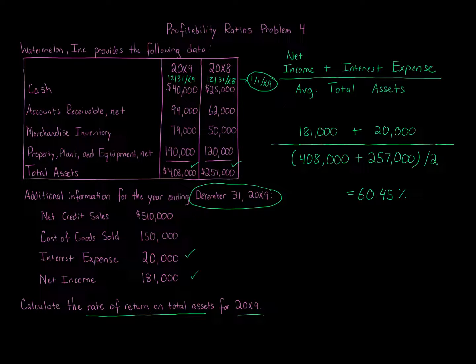So in other words, the rate is not affected by the portion of assets financed by creditors or stockholders. So by adding the interest expense to net income, the effect of whether the assets are financed by creditors' debt or stockholders' equity is eliminated. Because net income includes any income earned from long-term investments, the average total assets include long-term investments as well as the net operating assets. So that's why this formula is so important, this calculation. It's 60.45%, and that is how we calculate the rate of return on total assets.